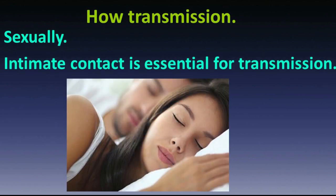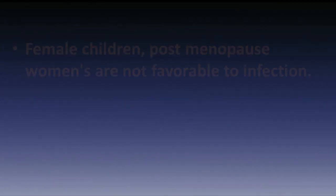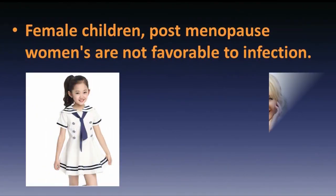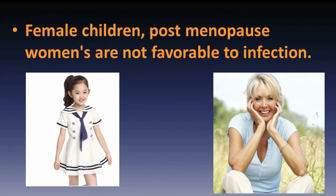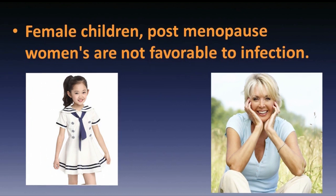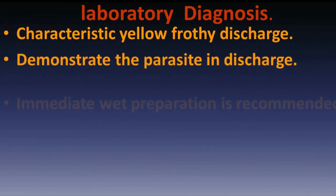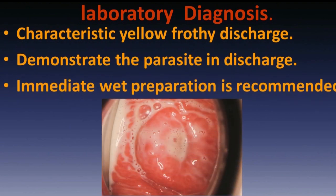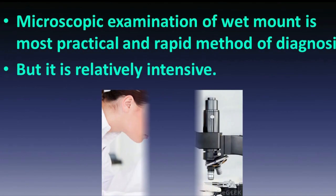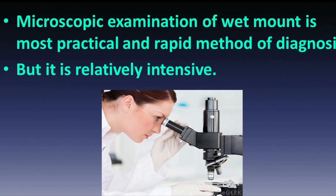Female children and postmenopausal women are not favorable to infection. For laboratory diagnosis, a characteristic yellow frothy discharge is observed. To demonstrate the parasite in discharge, immediate wet preparation is recommended; microscopic examination of a wet mount is the most practical and rapid method of diagnosis.